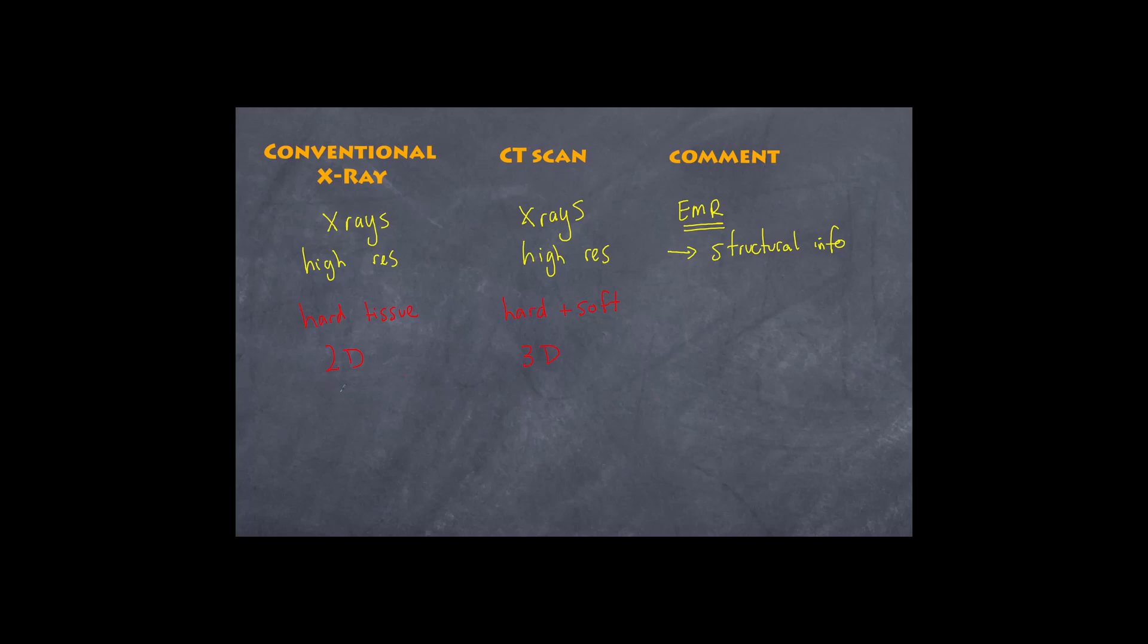Now, there are some differences though that put the CAT scan at a disadvantage. Firstly, the amount of X-rays that you're exposed to in a normal X-ray is a low dosage. Whereas you're constantly being exposed to X-rays from multiple angles in a CAT scan. So you're going to have a high dosage. Now, X-rays are a form of electromagnetic radiation that are ionizing. That is, they can have the potential to damage cells. And of course, over long term exposures that can lead to things such as abnormalities and particular cancers.